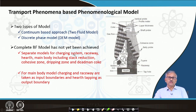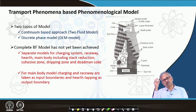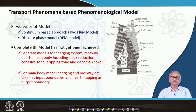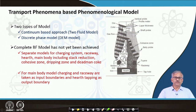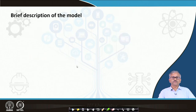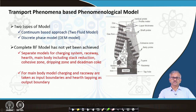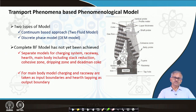Separate models exist for each part. For the main body modeling — considering all these zones — the input is the charge distribution from burden distribution modeling, and the raceway provides gas temperature and flow rate as another input. The hearth and metal tapping is an output. A complete modeling of the blast furnace integrating all parts — raceway, hearth, charging, and main body — has not yet been realized.